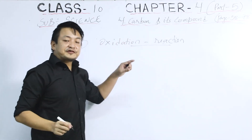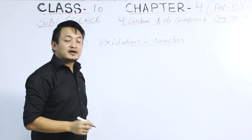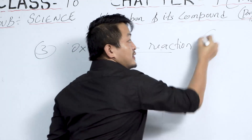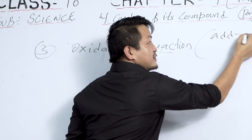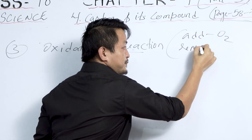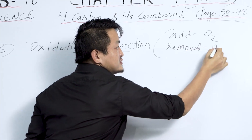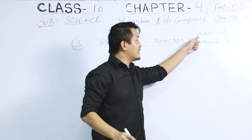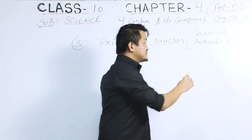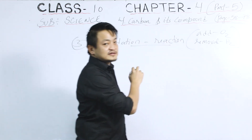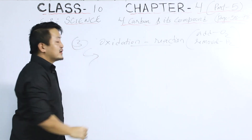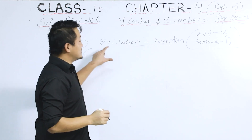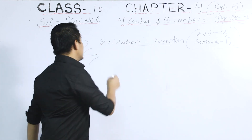Now students, in Chapter 1 — Chemical Reactions and Equations — you have already studied that oxidation involves adding oxygen and the removal of hydrogen. In oxidation, there is an addition of oxygen and a removal of hydrogen. Keep this in mind regarding carbon.